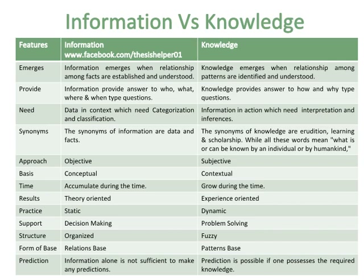Information accumulates over time, while knowledge grows over time. Results of information are theory-oriented, while results of knowledge are experience-oriented. The practice of information is static, while the practice of knowledge is dynamic. Information can support decision-making, while knowledge can support problem-solving. The structure of information is organized, while the structure of knowledge is fuzzy. The form or base of information is relations-based, while the form or base of knowledge is patterns-based.